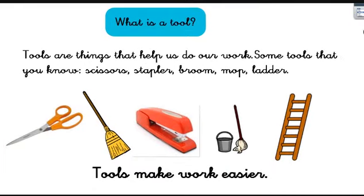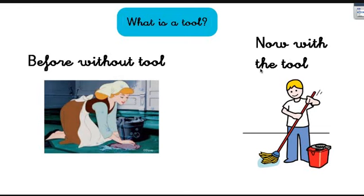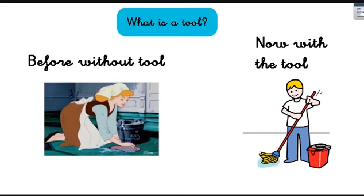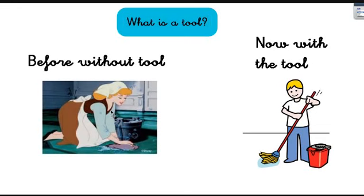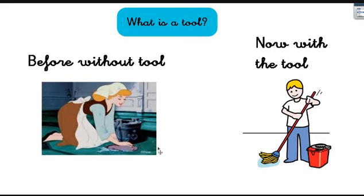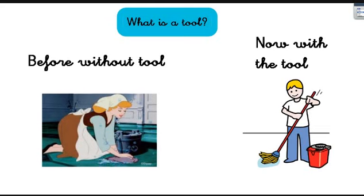Let's have a look at this example. Do you know who this is? Yes, this is Cinderella, and she is cleaning the floor. What is she using? She's using a piece of cloth, her hands, a little bit of water, a little bit of soap, and this bucket. But look at her — she's on her knees and look at her back. She's suffering. This is no fun.